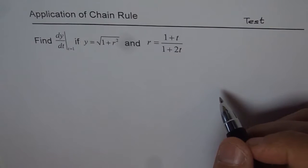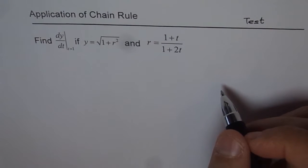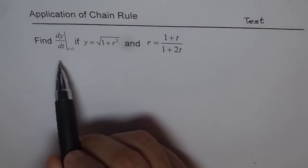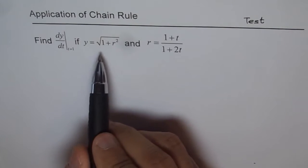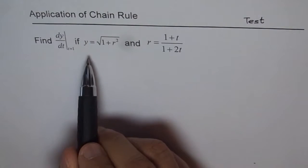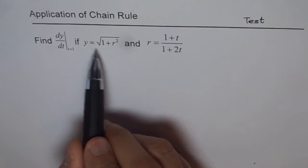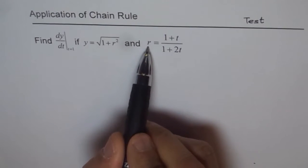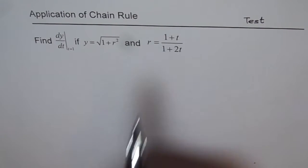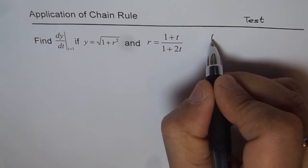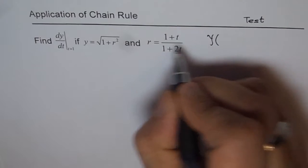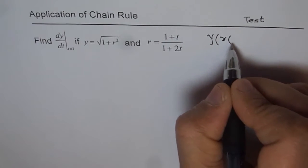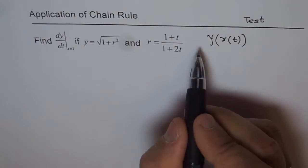First, let's understand what we are trying to do. We are trying to find the slope, which is dy/dt, for a composite function. Here, y is a function of r, and r is a function of t. So y is related to t — it is a composite function, and that is how they are related.